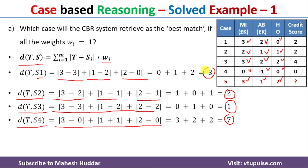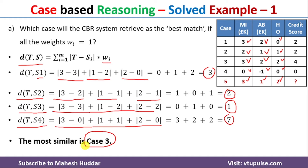Looking at the distances, the third case has the smallest value of 1. Therefore, the third case is more similar and is the best match for the new example. The credit score of the third case is 4, so that will be assigned to the target case. The credit score for the target case is equivalent to 4.